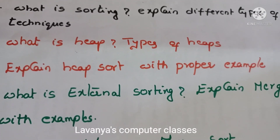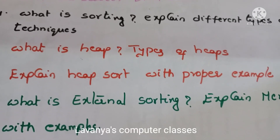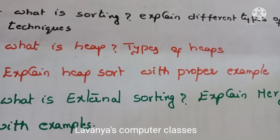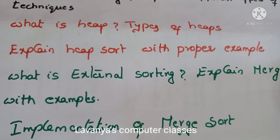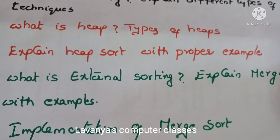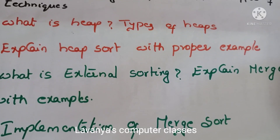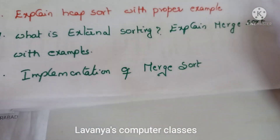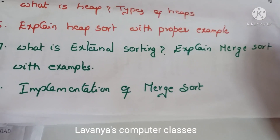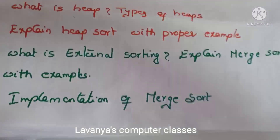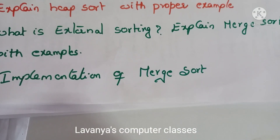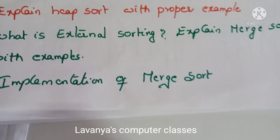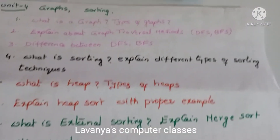Very important question: what is heap and types of heaps — max heap and min heap — explain with numerical example. Then heap sort: what is heap sort, take some numerical values and explain how to construct a heap sort. Next: what is external sorting? Explain merge sort with example. And last one is implementation of merge sort — how to implement a merge sort program. These are the important questions in unit 4.